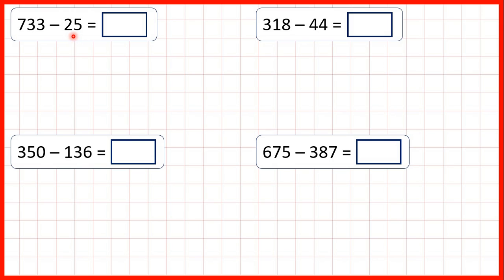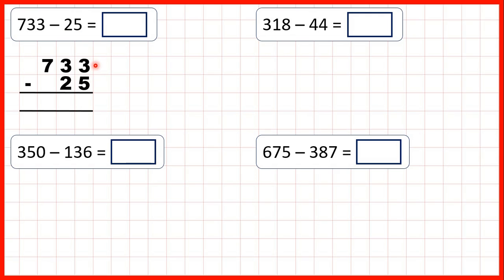Now, let's subtract using column subtraction. First, we have 733 minus 25. So we can set the question out like this, with our digits lined up on the right hand side. Because if our digits are lined up on the right, then our place value columns — our ones, tens and hundreds — will be lined up as well. Now with column subtraction, we work from right to left, so we start with our ones.